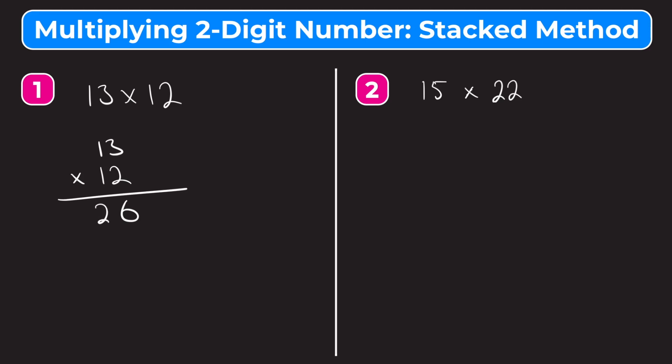Now we move on to the one, we're going to cross this two off so we don't get confused. And since this one in the 12 is in the tens place, it represents 10. When we start, we have to put a zero under the six to represent the fact that we are multiplying from the tens place. So we put a zero here and then we do the same thing. So we have one times three, that's three, so that goes here. And then one times one is one, and that goes there.